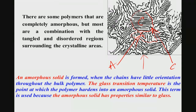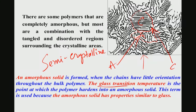Some polymers may be completely amorphous, with no local repeated arrangement of chains. But most are a combination of crystalline and amorphous regions — these are called semi-crystalline polymers. Semi-crystalline polymers have some fraction that is crystalline and some fraction that is amorphous.